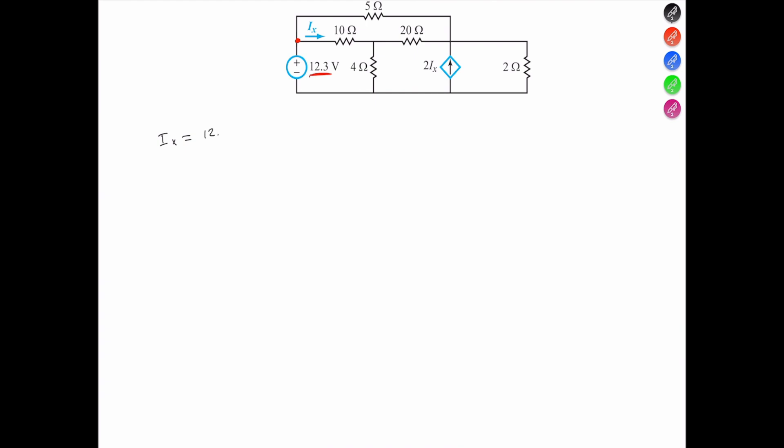So that would be 12.3 minus, let's give this terminal a name and call it V1. Minus V1, all over 10 ohms, is equal to Ix.